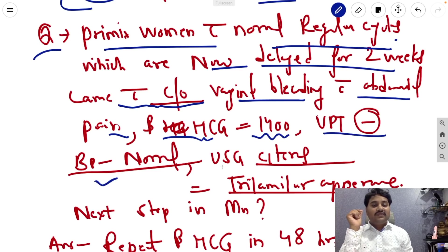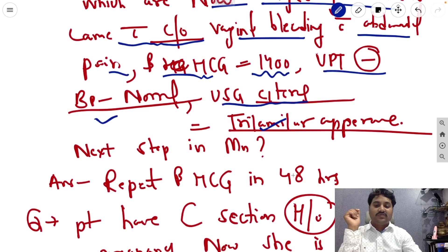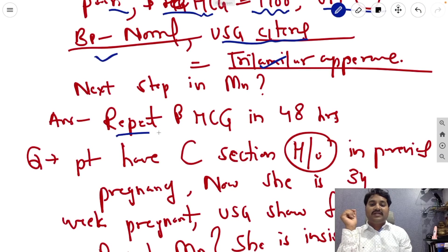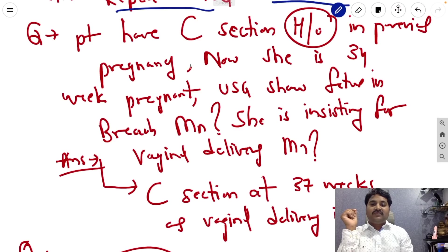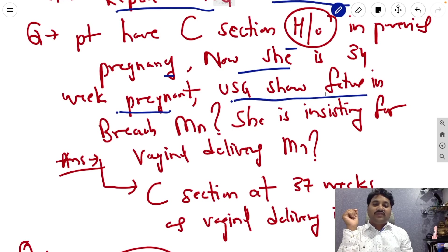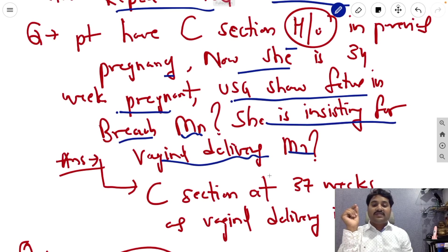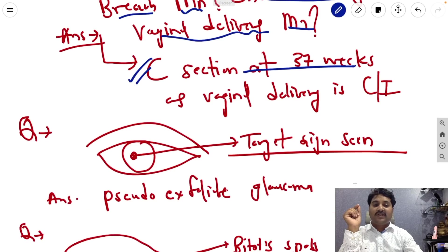So USG will show the trilaminar appearance. What is the next step in the management? The next step in the management is repeat beta hCG in 48 hours. Next question, patient with C-section which is between the previous pregnancy, now she is again 34 weeks pregnant. Now USG shows fetus in the breech. One more thing, the patient is insisting for vaginal delivery. So the management is again C-section we will do at 37 weeks as vaginal delivery is contraindicated.